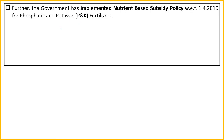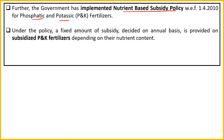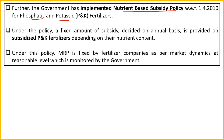In addition to urea, the government also runs a Nutrient Based Subsidy policy since 2010, under which subsidies are also provided for phosphorus and potassium fertilizers. The subsidy for P and K fertilizers is decided on an annual basis. The MRP is fixed for fertilizer companies, and whatever difference remains is paid as subsidy by the government.